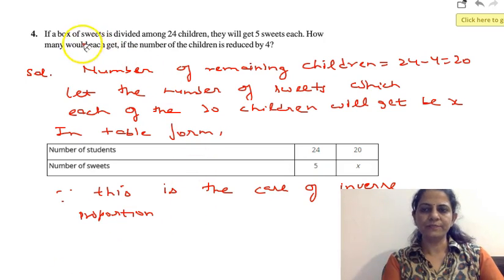The question is if a box of sweets is divided among 24 children, they will get 5 sweets each. How many would each get if the number of the children is reduced by 4?